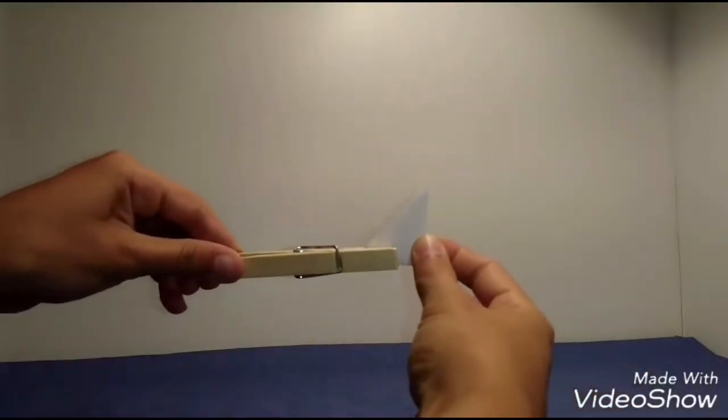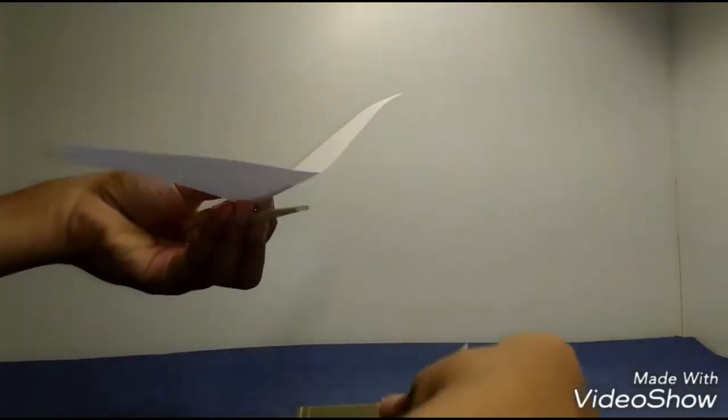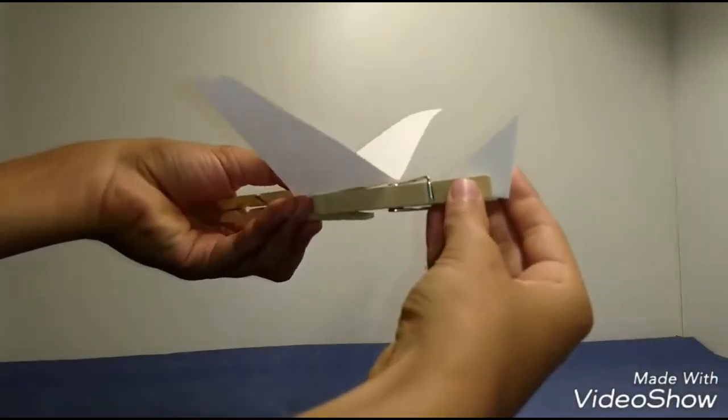Now just clip the triangle onto one of your clothespins. Tuck the piece to be the wing underneath the other one. And then push the two ends together.